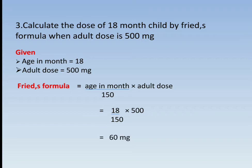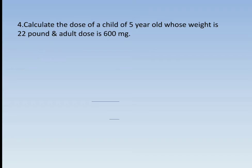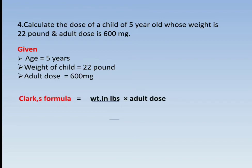The last question: Calculate the dose of a 5-year-old child whose weight is 22 pounds and adult dose is 600 mg. Given: Weight = 22 lbs, Adult dose = 600 mg. We apply Clark's formula: Child dose = (Weight in lbs × Adult dose) / 150 = (22 × 600) / 150 = 88 mg — approximately 80 mg. Students, these four questions are very important based on last year's GPAT questions. Try to note them down and practice them.